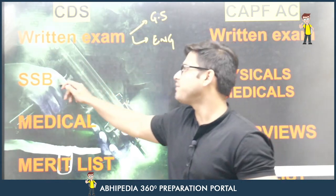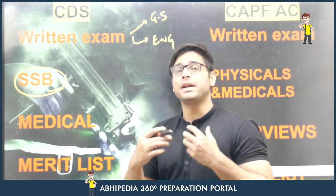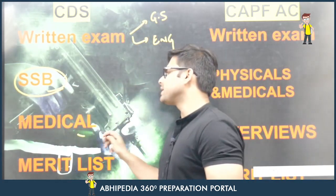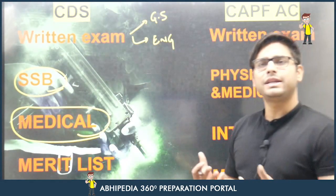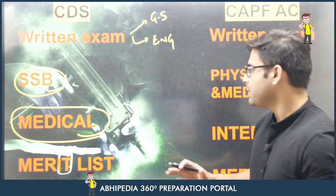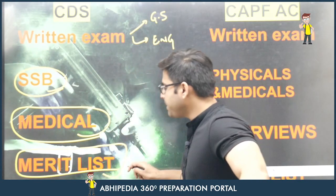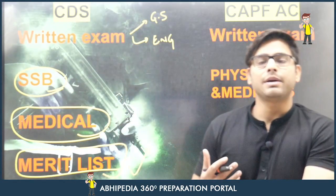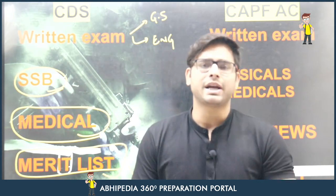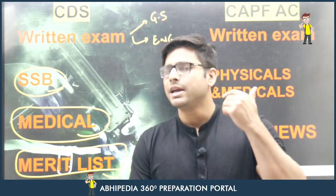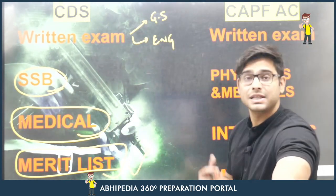After qualifying the written exam, you appear for the SSB, followed by an advanced medical check-up. After this, if your name is on the merit list, you proceed to the Academy — whether Indian Military Academy, OTA, IMA, or AFA, whichever is your first preference — provided you have qualifying marks. After the merit list, if you fall short at any step, you prepare again.